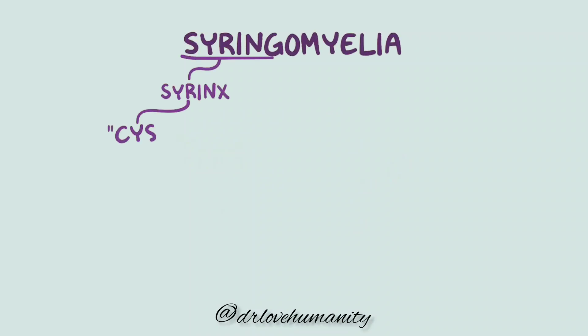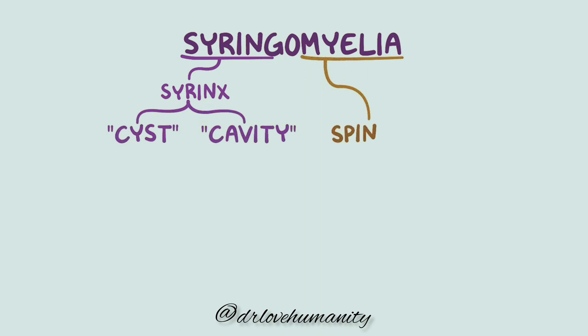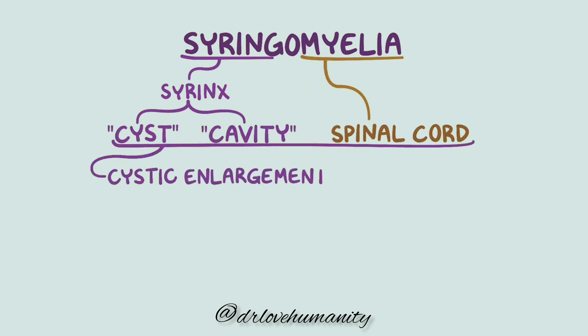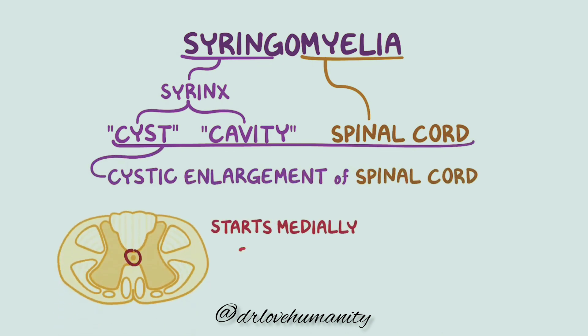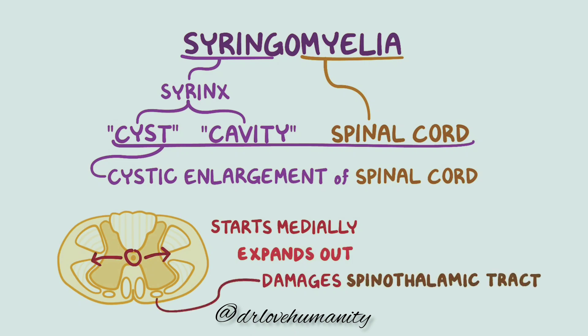In syringomyelia, syrinx means cyst or cavity, and myelia means a condition of the spinal cord. So syringomyelia is a cystic enlargement of the spinal cord, and it typically starts medially and enlarges outward, eventually damaging the spinothalamic tract, which is a part of the spinal cord that sends sensory signals about pain, pressure, temperature, and touch to the brain.